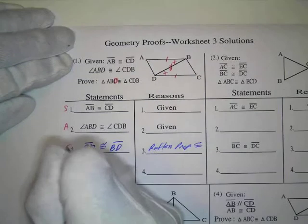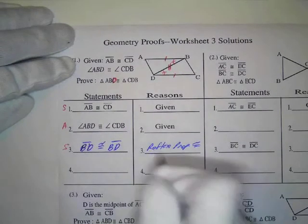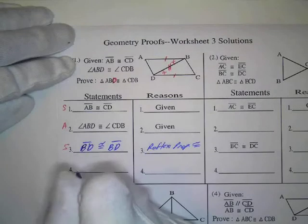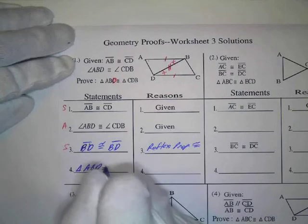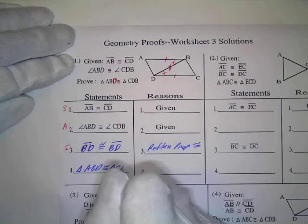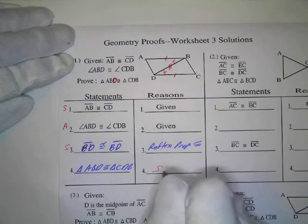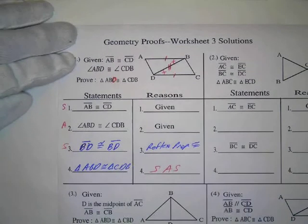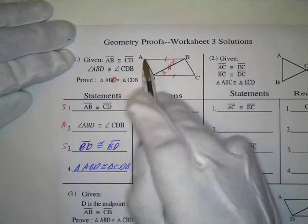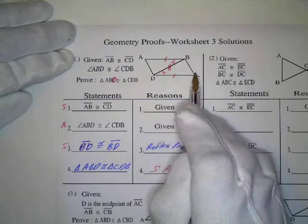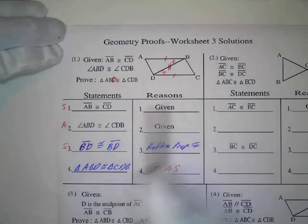I mark that with two marks up here. That gives me another side, so now I've got side-angle-side. Triangle ABD is congruent to triangle CDB, and that's by side-angle-side. So that was a misprint. Make sure you correct that. It should have been ABD, not ABC.